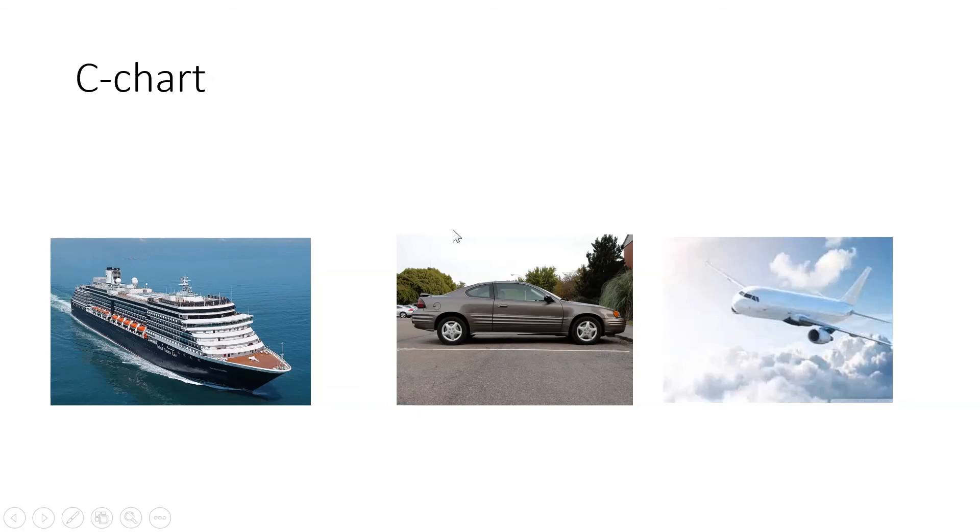C-chart is for large quantity inspection trying to find so many defects in one single unit. If you inspect more than one and it's not known how many, then you can do it per unit inspection. That summarizes when to use p-chart, u-chart, and c-chart.